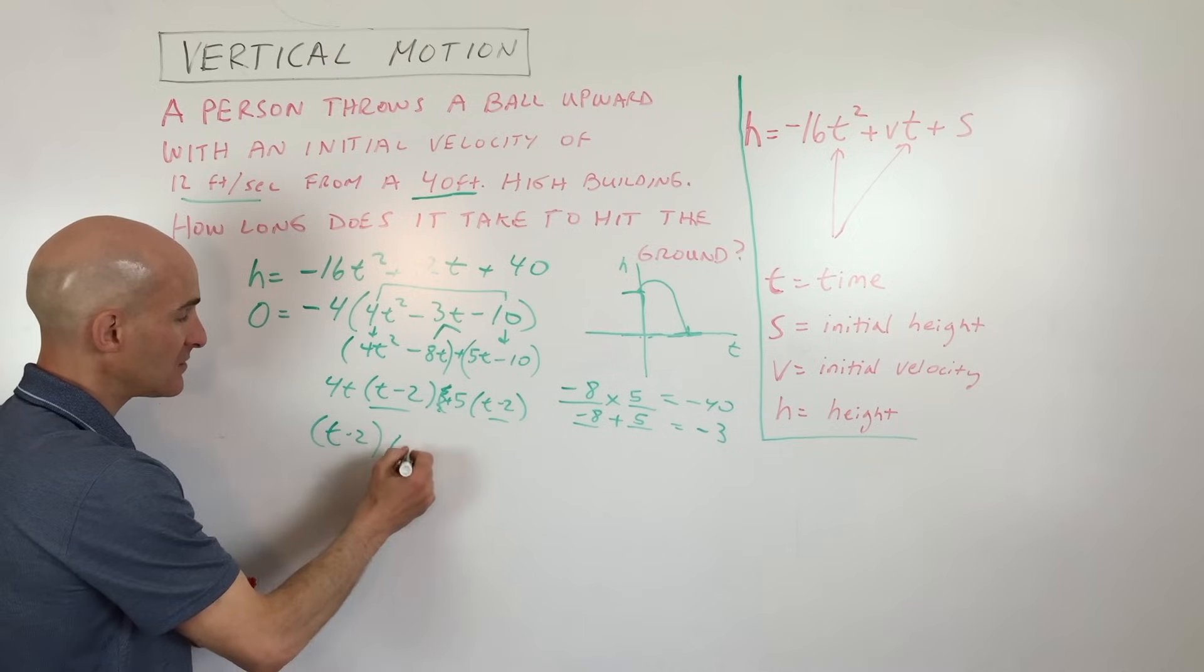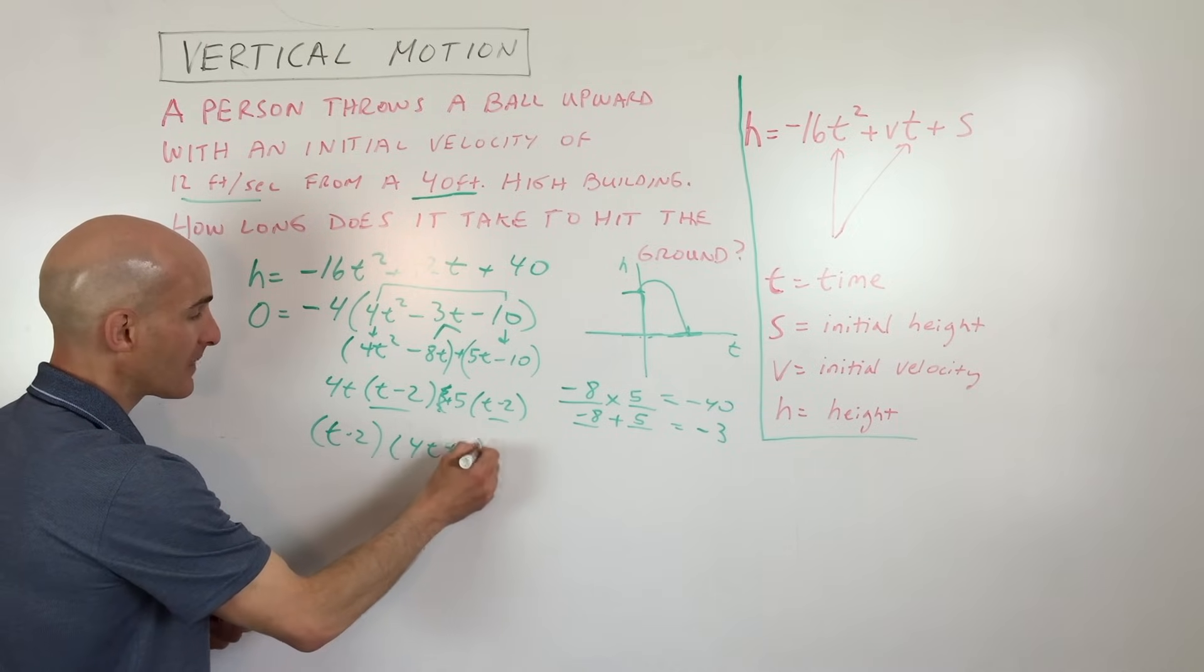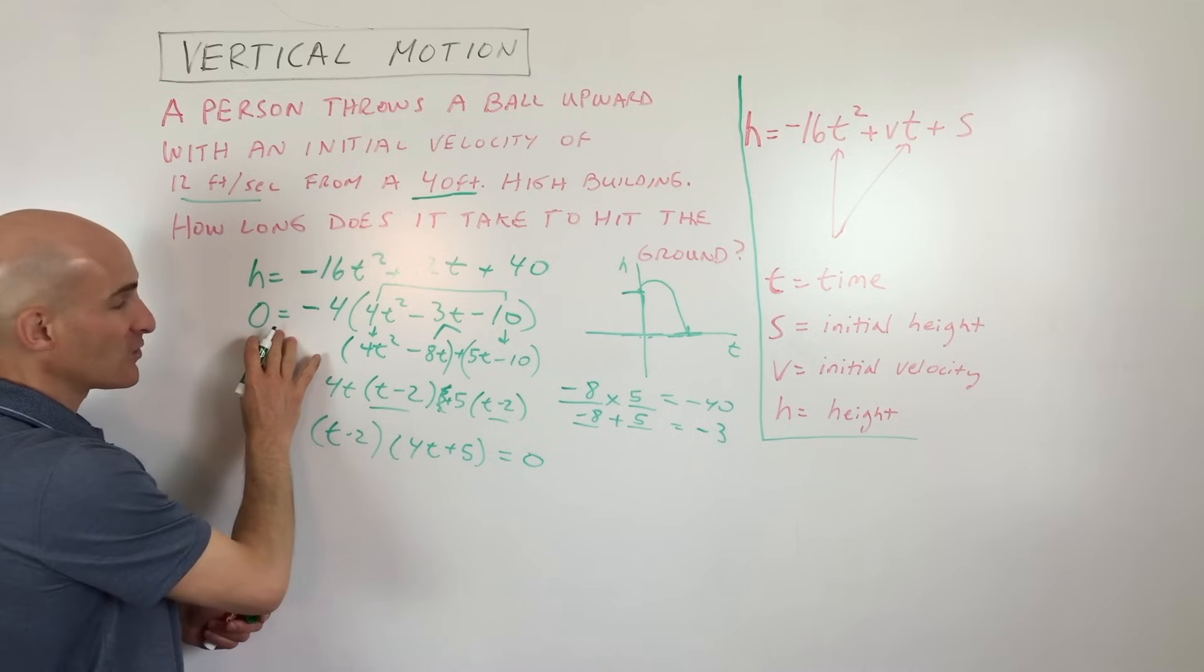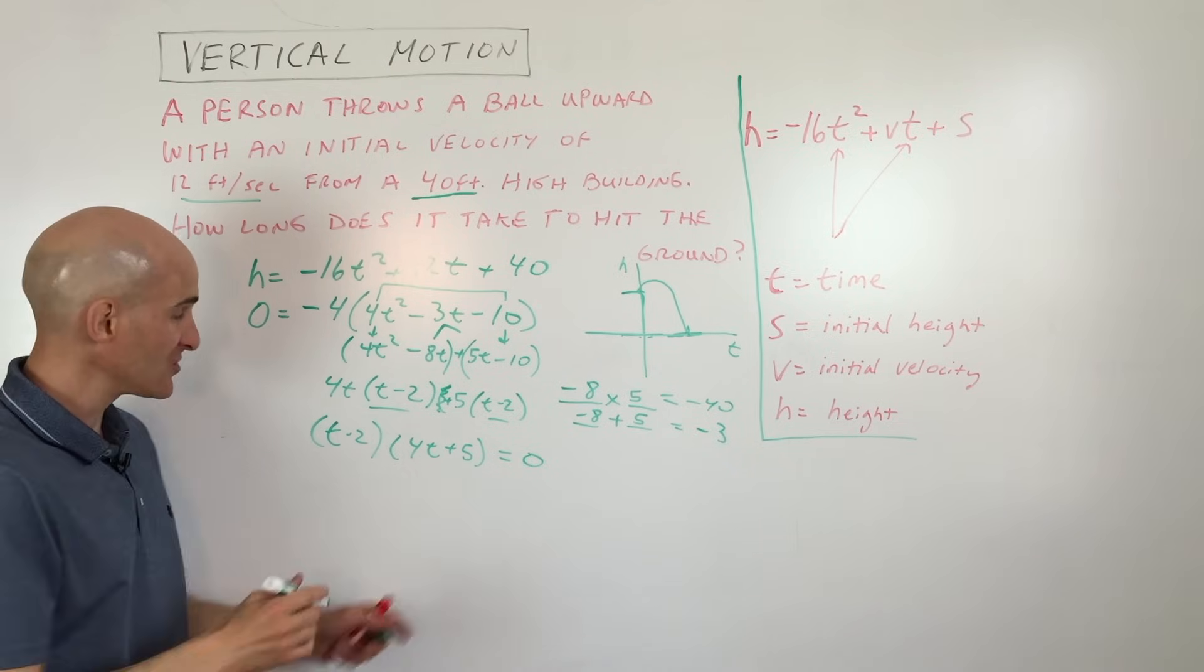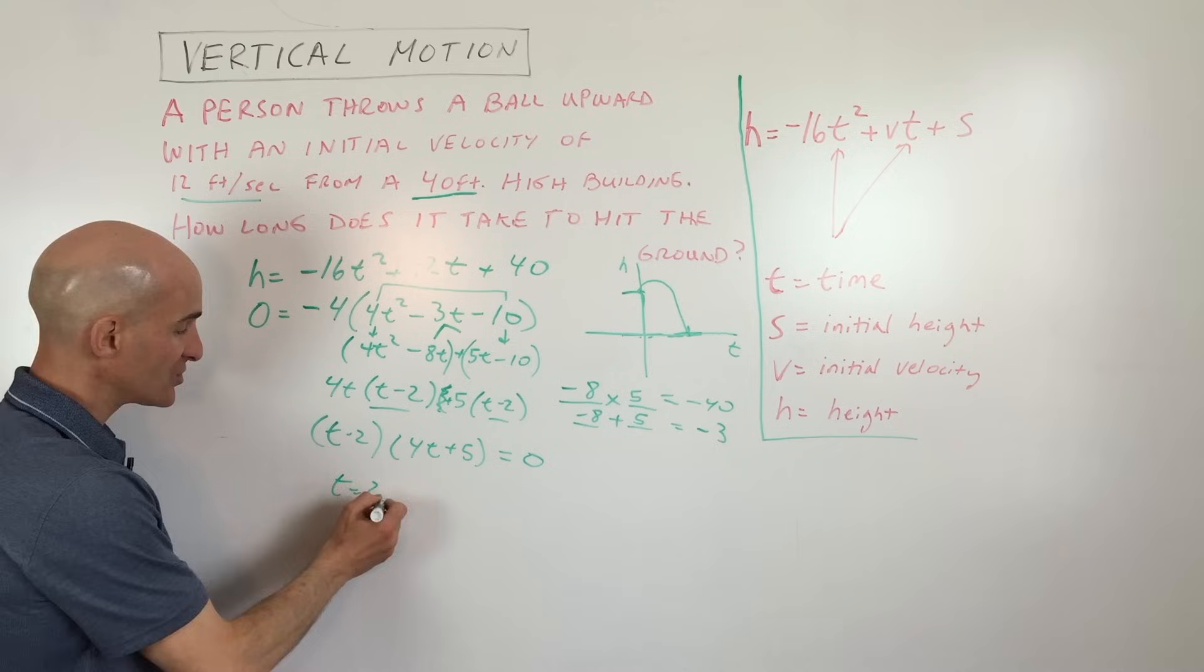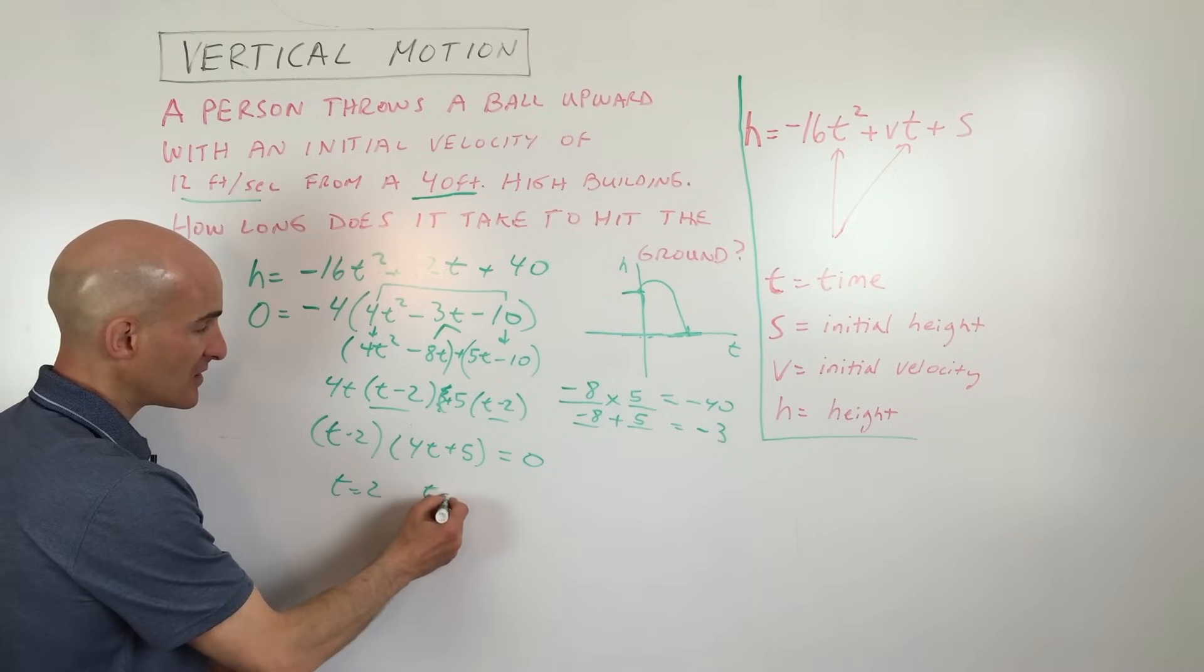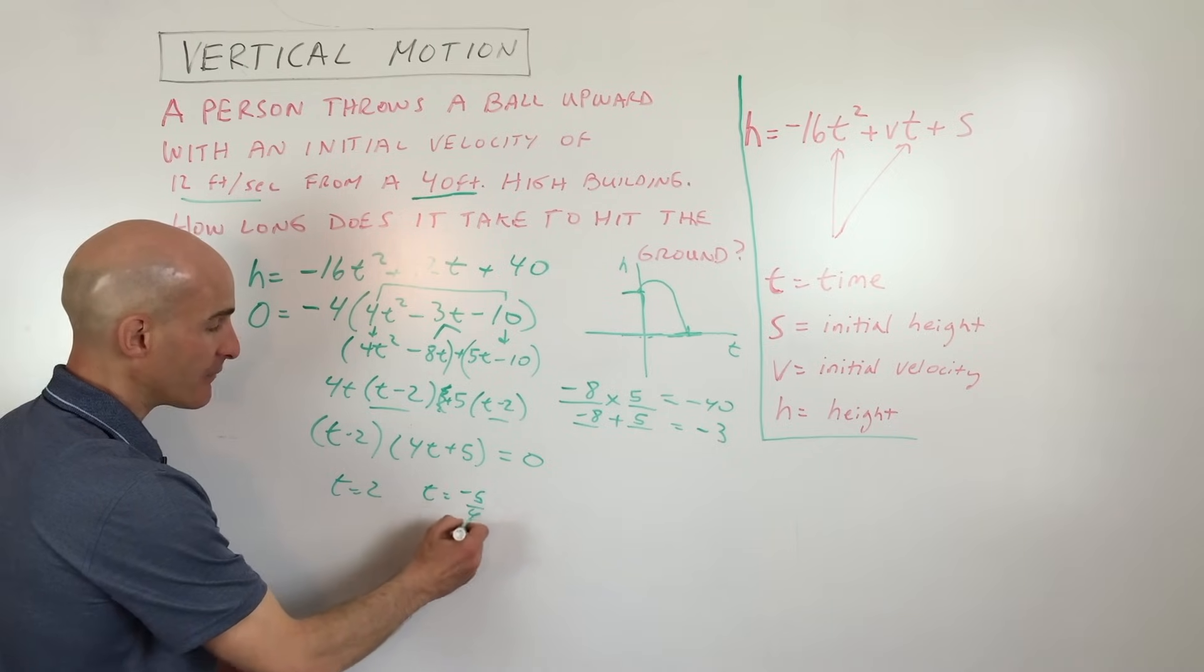And we're left with 4t plus 5. Now we're interested in where the height is equal to 0. So we're going to set each of these factors equal to 0 and solve. So here you can see t is going to equal 2. Here t is going to equal negative 5 fourths.